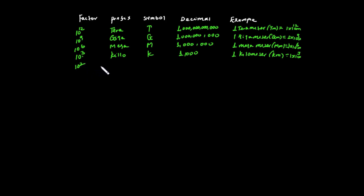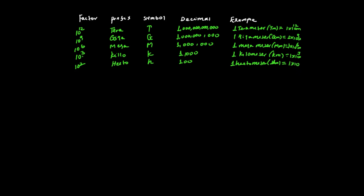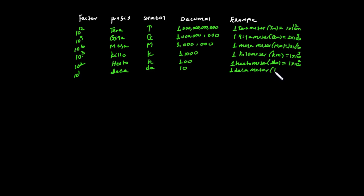10 to the power of 2 is Hecto, with the prefix symbol H and a decimal value of 100. 1 hectometer is equal to 1 times 10 to the power of 2 meters.